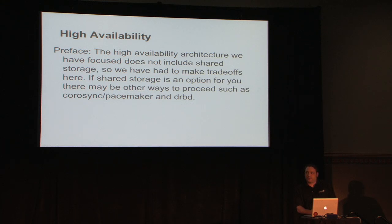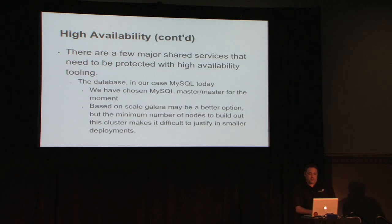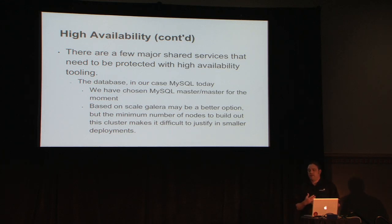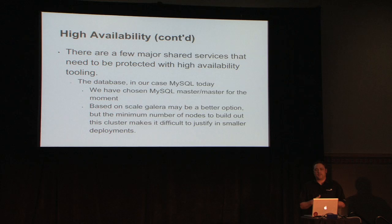We did take a slightly different approach than what we hear most of the time. When you think about OpenStack, all of the API services are stateless — they don't really make sense in an active-passive model. So there are really only a few services that do benefit from active-passive, and that's around the database, the message queue, and Glance.